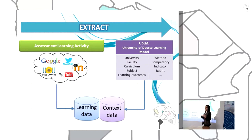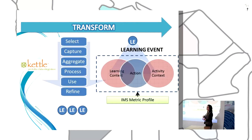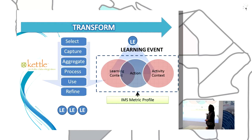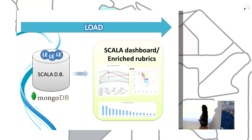In the extraction phase, we take data from learning tools that have been used in different assessment activities, and also information from the context — the context of the student, who is the student in our university, and from the activity: the subject, the course, the faculty, and so on. After extraction, we transform this data through different processes — cleaning, aggregating, and integrating — to obtain learning events. These learning events are triples formed with learning context information, actions that follow the IMS Caliper standard, and activity context. These learning events are stored in a database that is later exploited through the Scala dashboard, enriched rubrics, or other APIs for different uses.